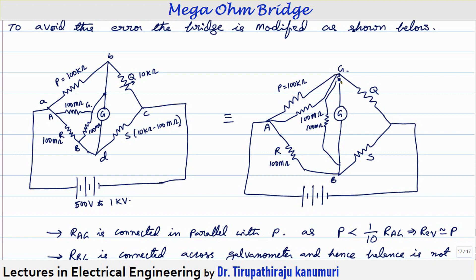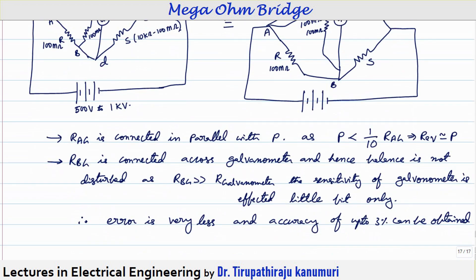Under balanced conditions, the potential at G equals the potential at B, so no current passes through R_BG. Therefore, the effect of R_BG can be neglected under balanced conditions. Only R_AG in parallel with P affects the final result, and since P is much smaller than R_AG, the error introduced is very small, giving accuracy of about 3 percent.